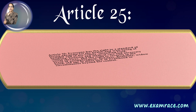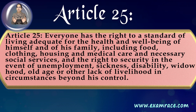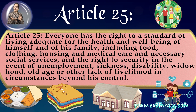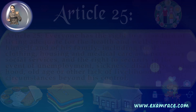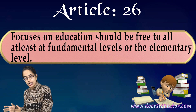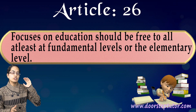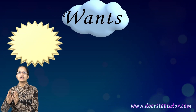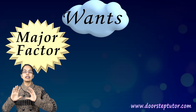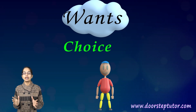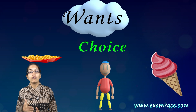Article 25 of the UN Declaration of Human Rights talks about adequate living conditions along with a healthy and good life, satisfying the need for food, clothing, housing, medical care, and essential social services. Article 26 focuses on education being free to all at least at the fundamental or elementary levels. Wants are a major factor that determine scarcity, and this scarcity then leads to choice — for instance, whether to go for ice creams or french fries.